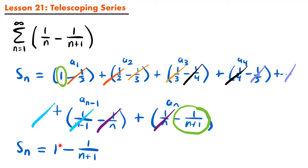We have the first part of a sub 1 and the last part of a sub n. We can use this partial sum to determine the convergence of our telescoping series. In fact, the way we found this nth partial sum can be replicated for other telescoping series.